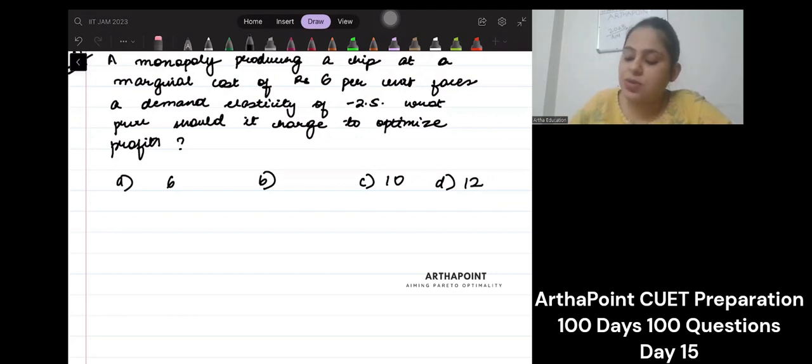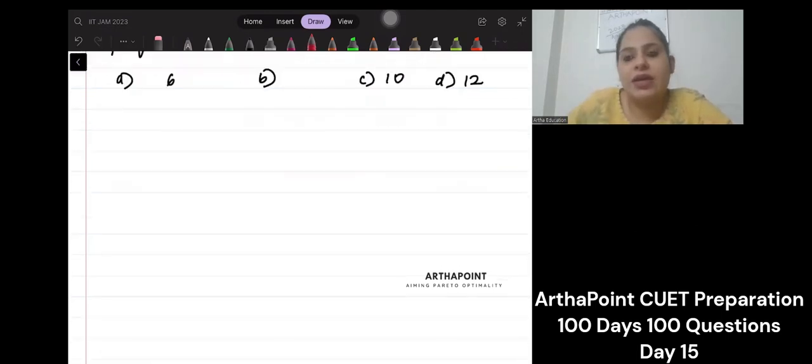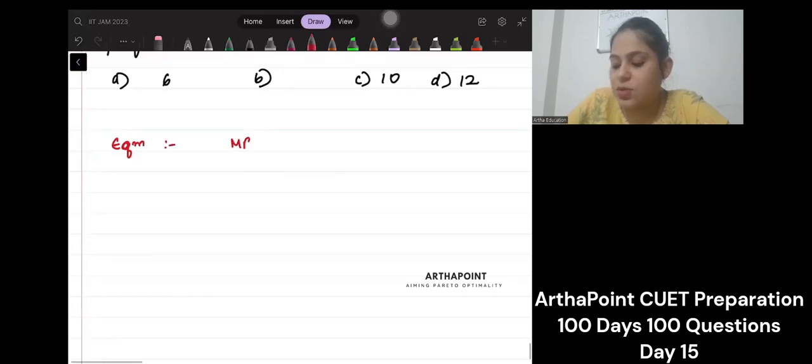It's a very simple question where you're supposed to apply the MR=MC condition. So equilibrium states that MR should be equal to MC.